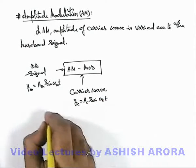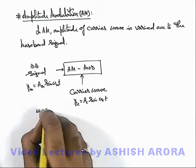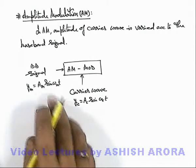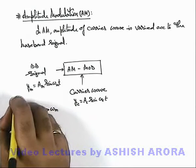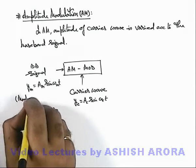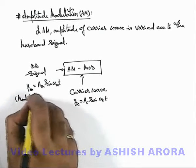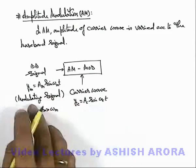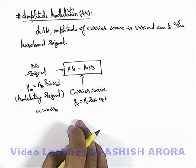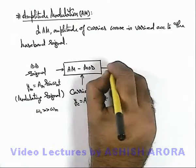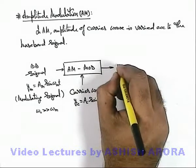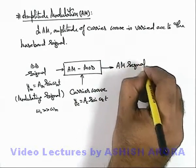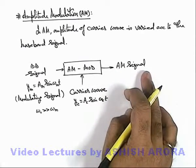Here ωc we can consider to be very much greater than the signal which is being modulated. This baseband signal is also called the modulating signal — the signal which will modulate the carrier wave when it is imposed on the carrier wave. So the output of this modulator will be an AM signal, or amplitude modulated signal.